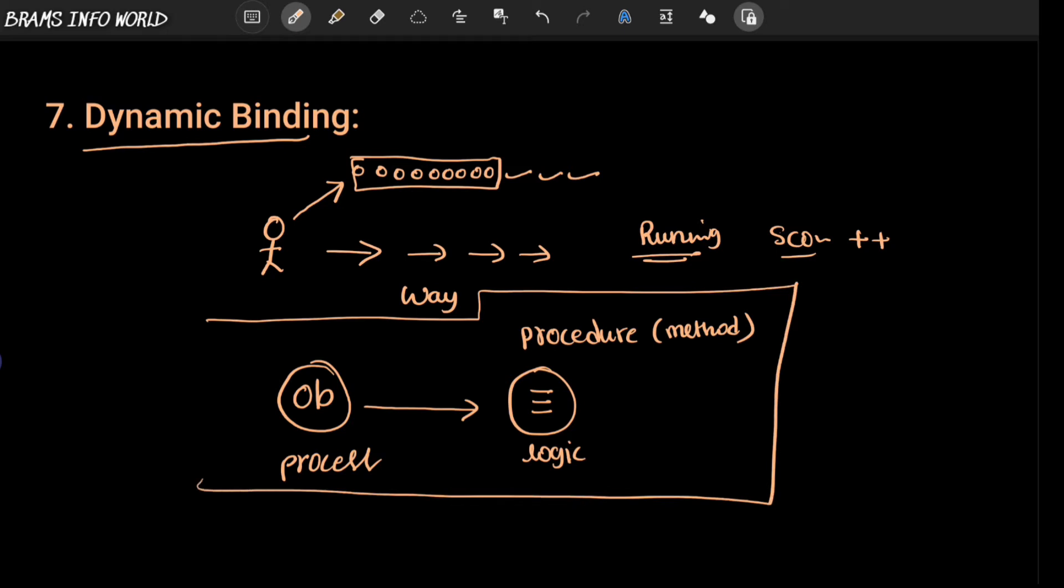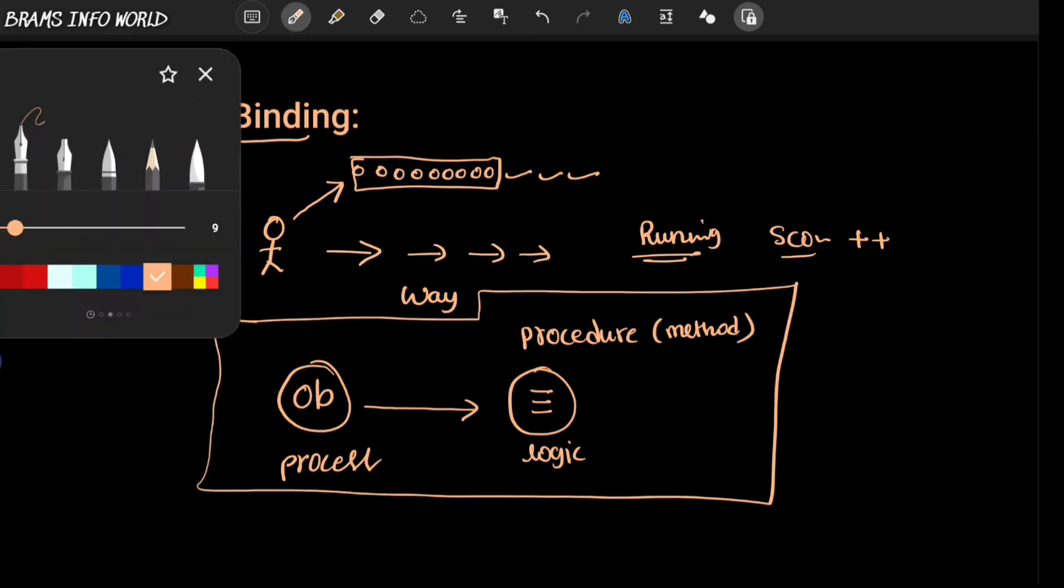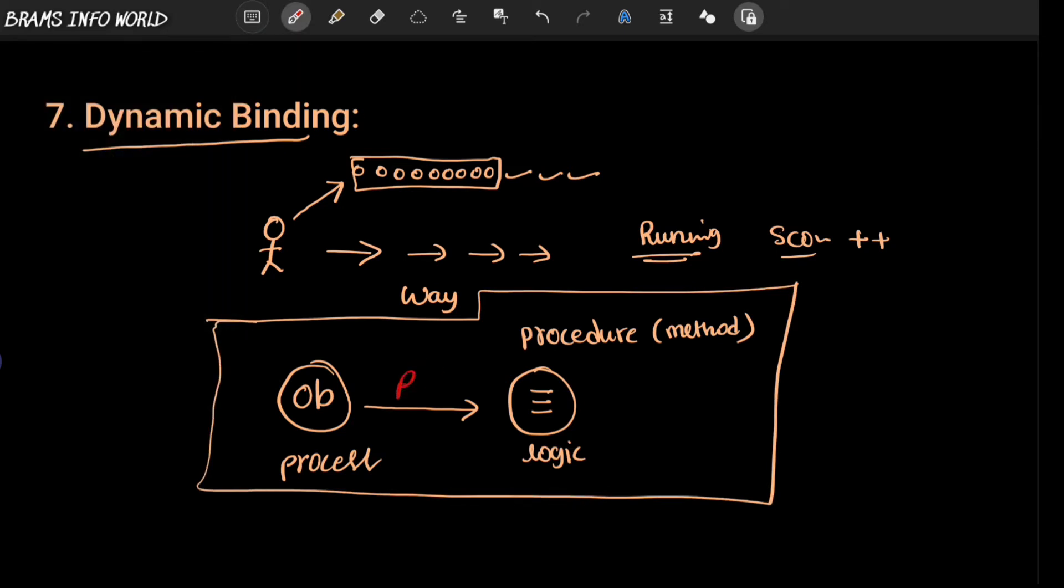That means the code executes a particular procedure or particular method when the process is called. This is nothing but dynamic binding, or we can also call it as dynamic dispatch.